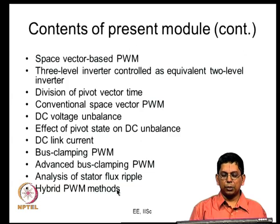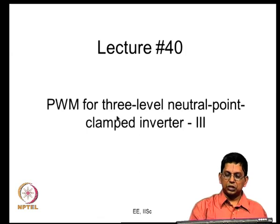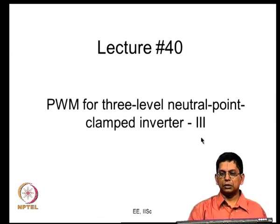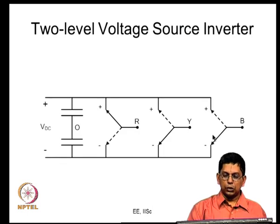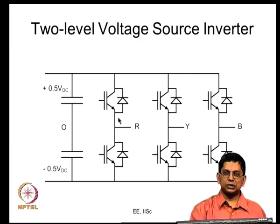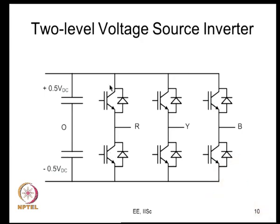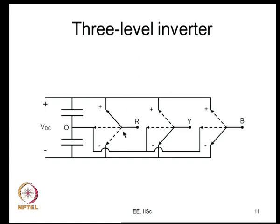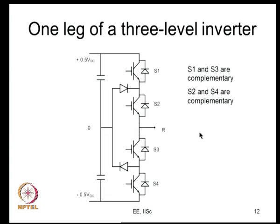This is PWM for a three-level neutral clamped inverter — the third and final lecture in this module. In a three-phase two-level voltage source inverter, each leg is a single-pole double-throw switch. The two switches operate in a complementary fashion and can block voltage in one polarity. In a three-level inverter, every leg instead of being a single-pole double-throw is now a single-pole triple-throw switch, with throws connected to the positive bus, negative bus, and DC neutral.